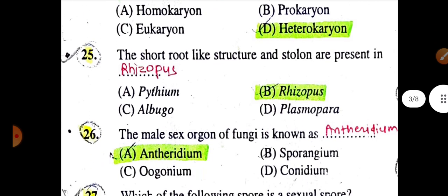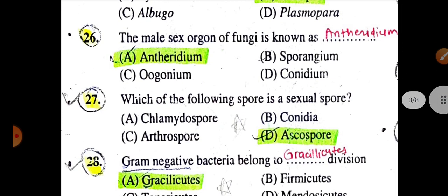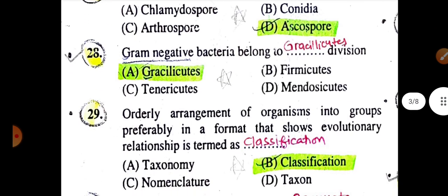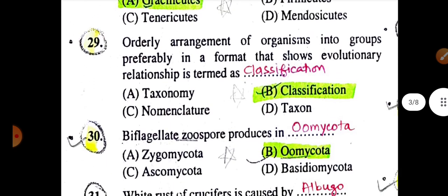A short root-like structure and stolon are present in Rhizopus. The male sex organ of fungi is known as antheridium. Which of the following spores is a sexual spore? Answer: Ascospore. Gram-negative bacteria belong to the Gracilicutes division.